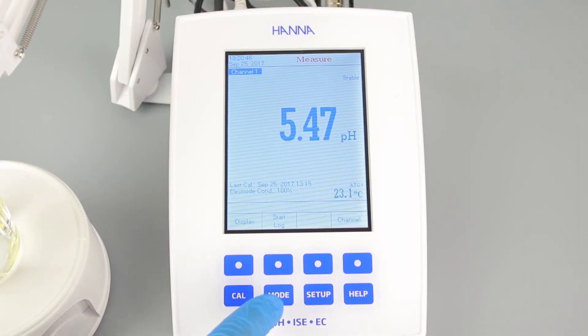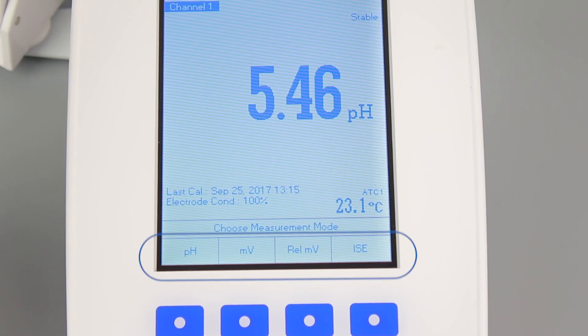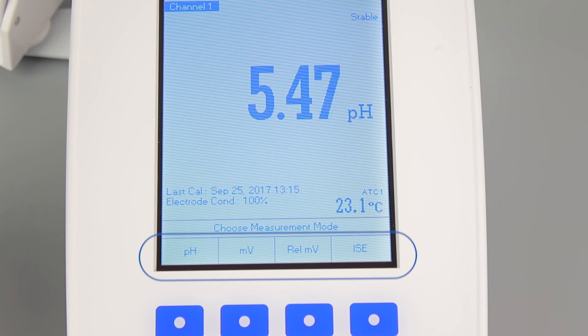After calibration, you can begin taking measurements. Place the electrodes into your sample and wait for a stable reading. Once stable, you can press MODE to switch between pH, mV, relative mV, and ISE.